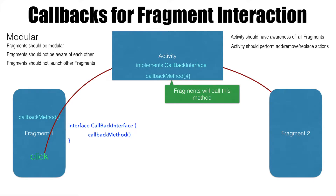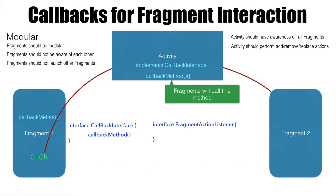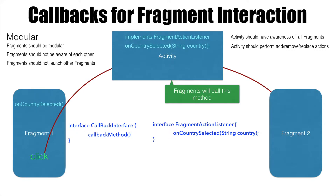So instead of using a name like callback interface, we will use a proper name like FragmentActionListener. You can use anything that makes sense for you. Our activity will implement FragmentActionListener, which will have a method called onCountrySelected — analogous to a callback method — taking a String argument. This is where we pass the country selected in the first fragment. The value will propagate from Fragment1 to the activity, and then from the activity to Fragment2.